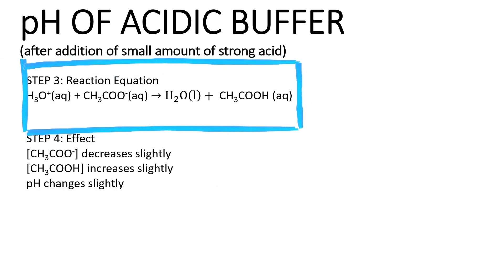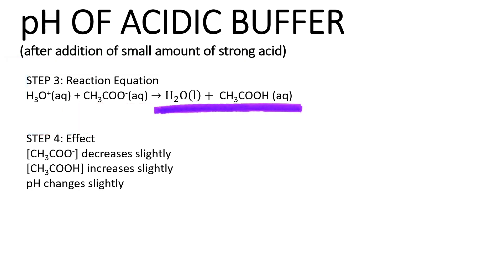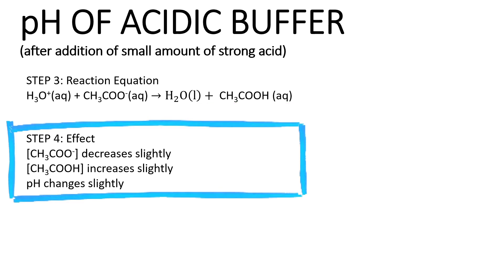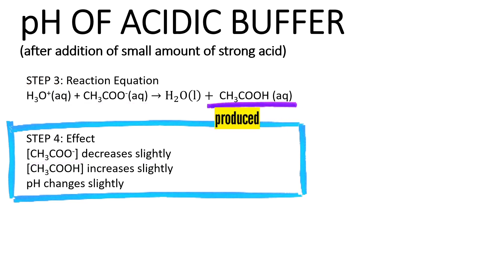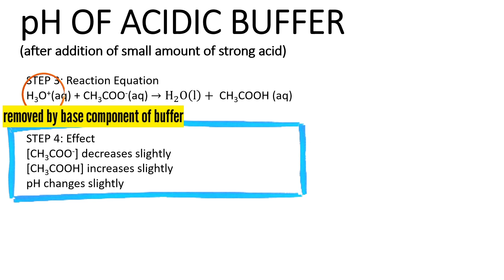Step three is to write the reaction equation. Since a small amount of strong acid is added, strong acid gives H3O⁺ ions. The H3O⁺ ion from the strong acid reacts with the base component inside the buffer — CH3COO⁻ — to give water and CH3COOH. The effect is that CH3COO⁻ concentration decreases slightly, while CH3COOH concentration increases slightly. As all the H3O⁺ from the strong acid is removed by the buffer, the pH of the buffer only changes slightly.